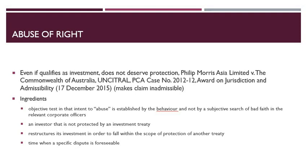This is provided in Philip Morris Asia vs Australia, in the Award on Jurisdiction and Admissibility dated 17 December 2015. This case also laid down the ingredients of the defense of abuse of rights: an objective test in that intent to abuse is established by behavior and not by a subjective search of bad faith in the relevant corporate offices; an investor not protected by an investment treaty restructures its investment to fall within the scope of protection of a treaty; the time when such dispute is foreseeable. The respondent has to establish that the restructuring was to benefit from a treaty. In the Philip Morris case, the claimant was unable to prove that they derived any business or other benefit from the restructuring.